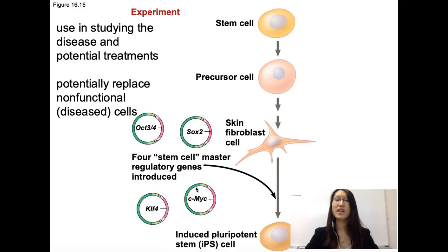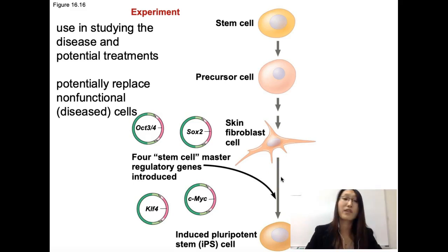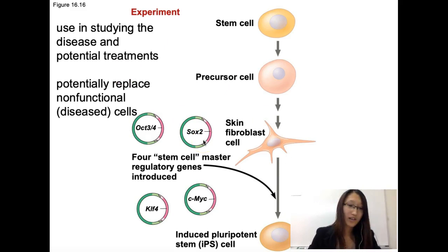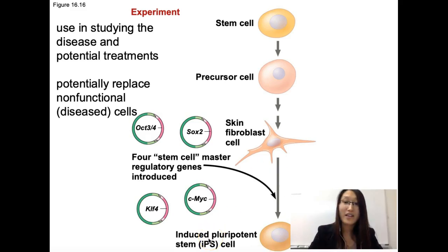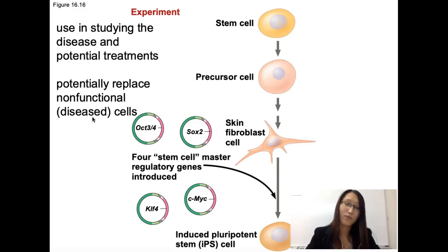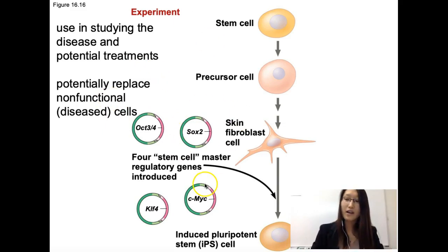Why is this important? Once we get good enough at doing this — right now it's really expensive and difficult — the future of science is that instead of using embryonic stem cells, which causes a lot of ethical issues, we can use adult unipotent or multipotent stem cells and turn them back into pluripotent stem cells, and then use that to fix diseases. For example, a person has a mutation in their pancreatic cells and cannot make insulin the normal way — that's diabetes. We can use this mechanism to produce healthy cells so that these patients can actually make their own insulin. That's a possibility, but right now it's too expensive to do.